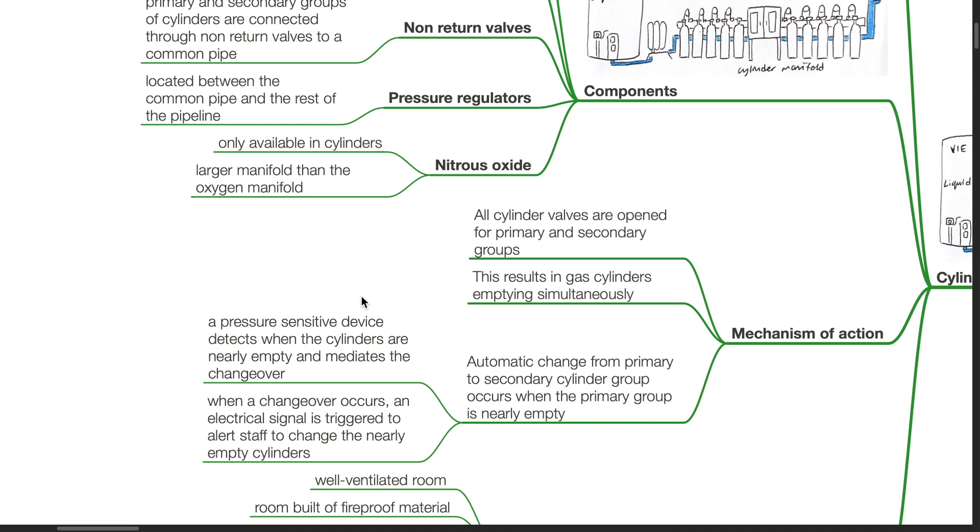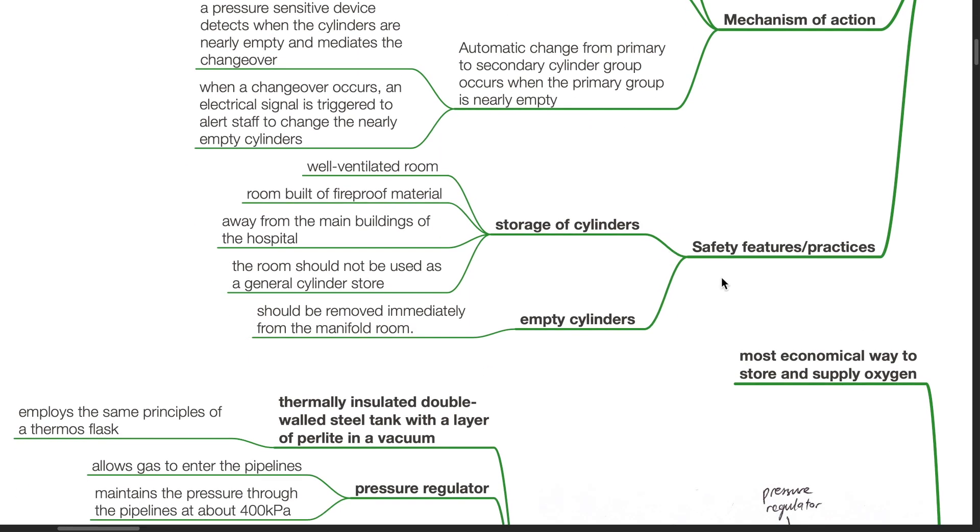Safety features or practices: Storage of cylinders. These cylinders should be stored in a well-ventilated room built of fireproof material away from the main buildings of the hospital. The room should not be used as a general cylinder store. Empty cylinders should be removed immediately from the manifold room.